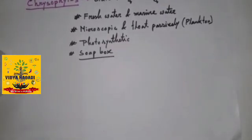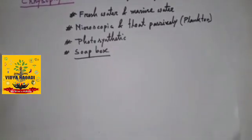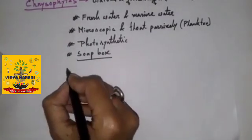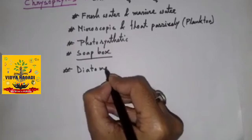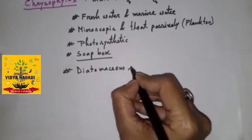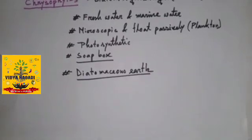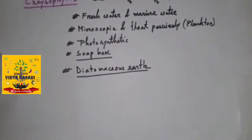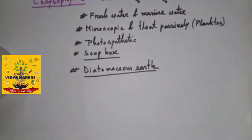In diatoms these walls are embedded with silica and thus they are indestructible. Diatoms have left behind large amount of cell wall deposits in their habitats. This accumulation over billions of years is referred to as diatomaceous earth. So diatomaceous earth is nothing but deposit of cell wall of diatom. This diatomaceous earth is gritty and so used in polishing and filtration of oils and syrups.